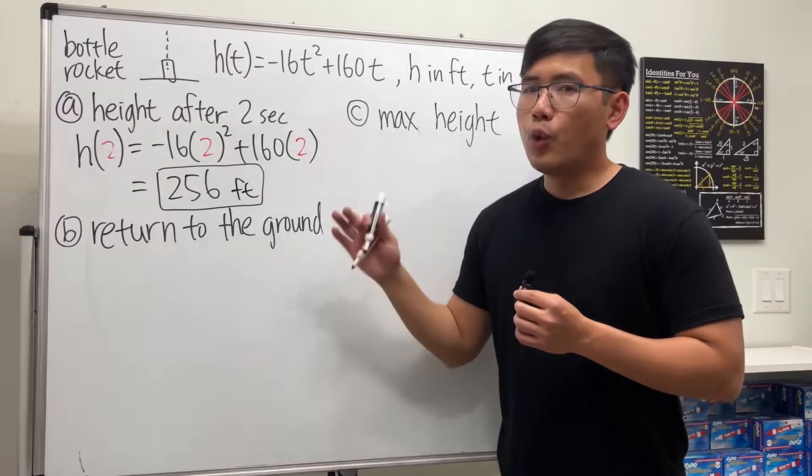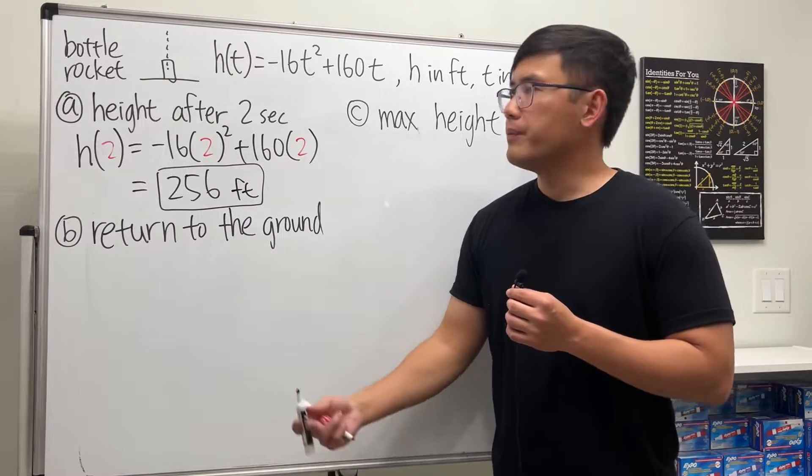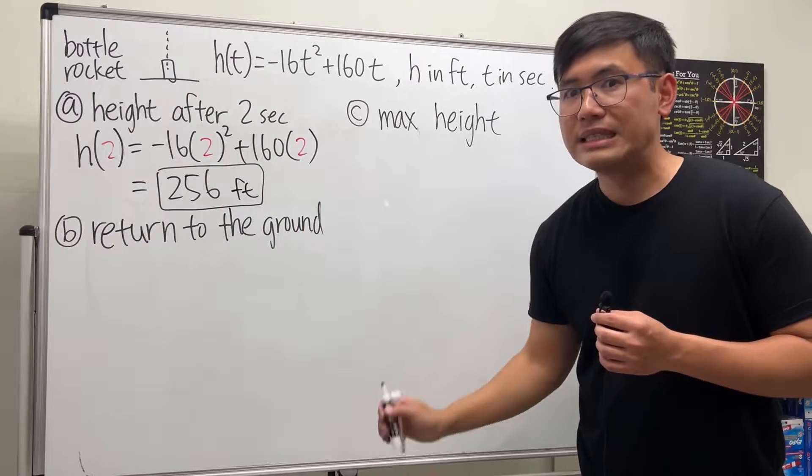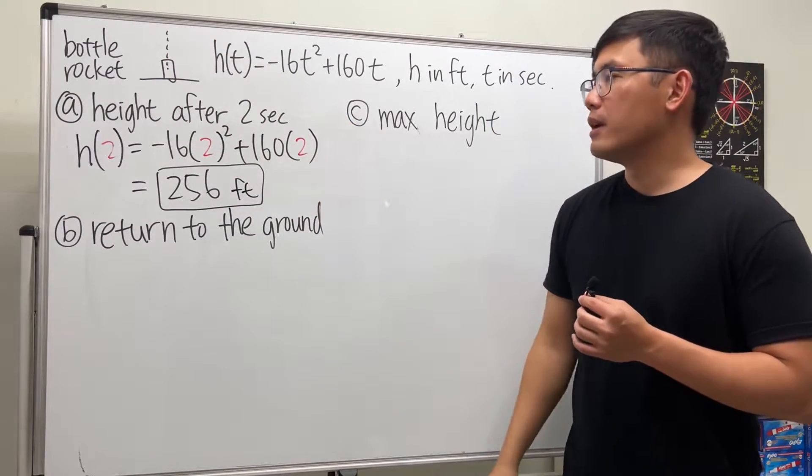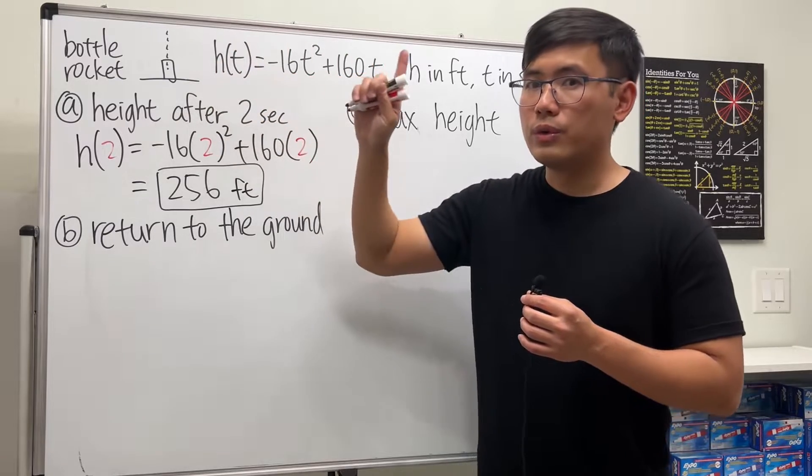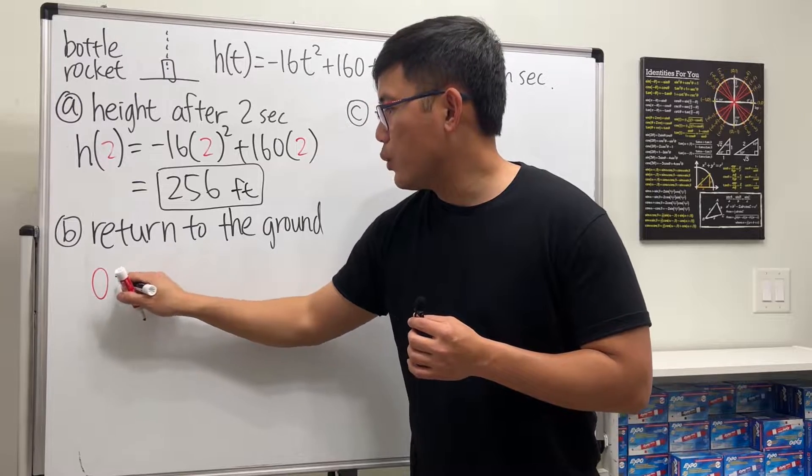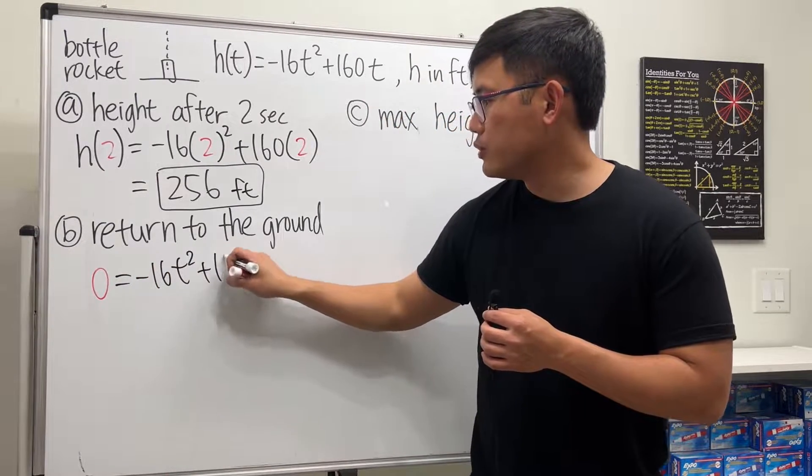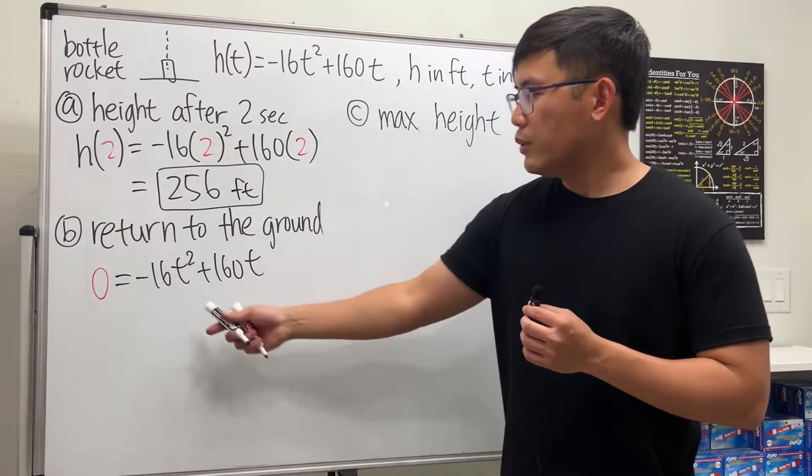Now part B: when will the rocket return to the ground? Returning to the ground means the height is at zero - that's ground level. So we make h(t) equal to zero and solve for t. We're looking at 0 = -16t² + 160t. We just have to solve this quadratic equation.